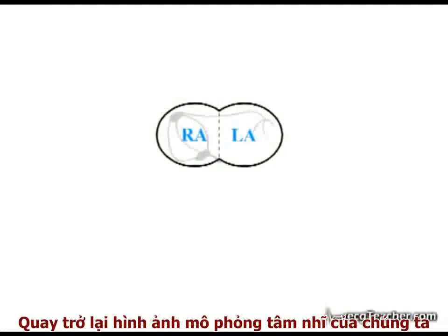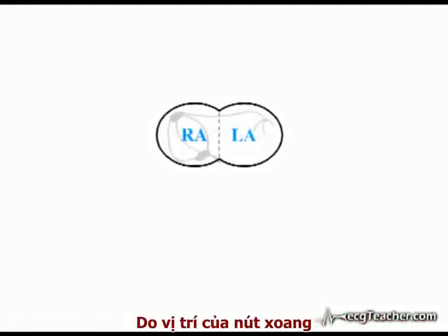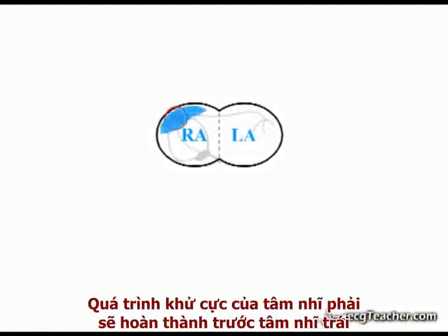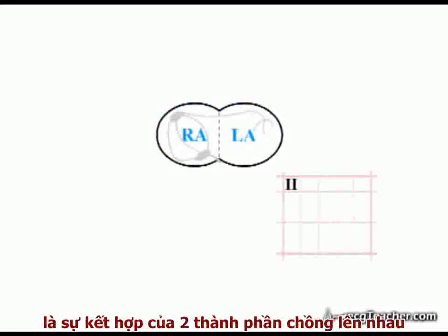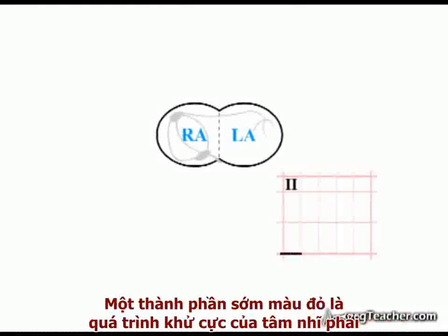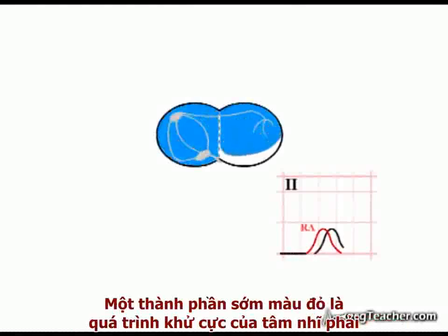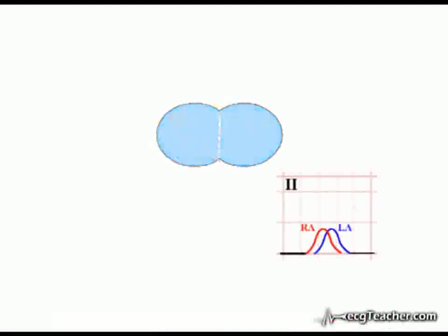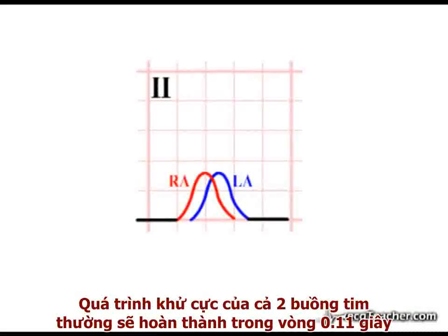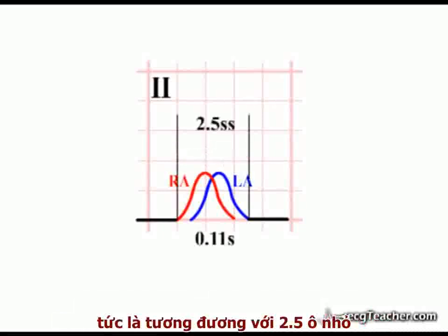Returning to our atrial schematic, you will also notice that, because of the location of the SA node, depolarization of the right atrium is complete somewhat earlier than that of the left. The normal P-wave, therefore, can be considered as being composed of two overlapping components: one early component predominantly due to right atrial depolarization, and a second later component due to left atrial depolarization. Depolarization of both chambers is normally complete within 0.11 seconds, approximately 2.5 small squares.